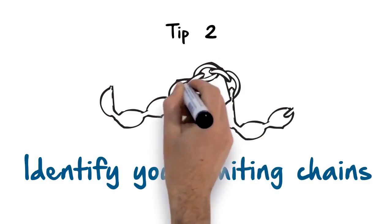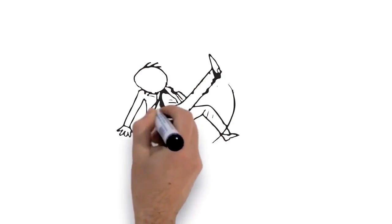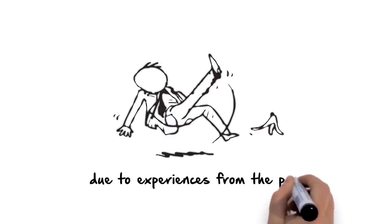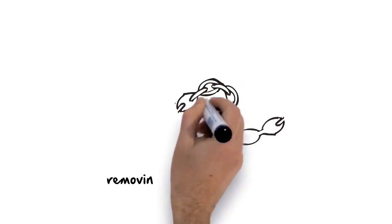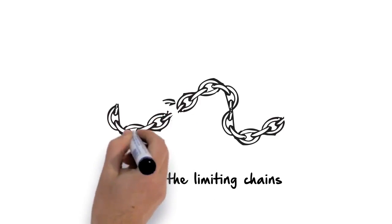Tip 2: Identify Your Limiting Chains. It's natural to feel restricted in your situation because of experiences from the past or fears about the future. Empower yourself by removing the limiting chains that you've put on yourself and trust in Allah.